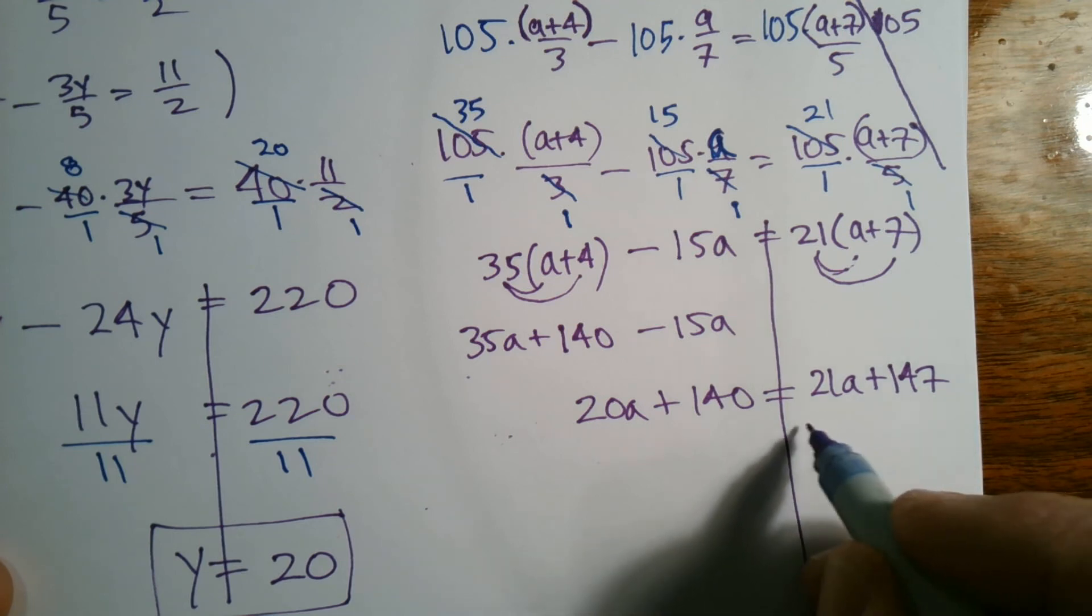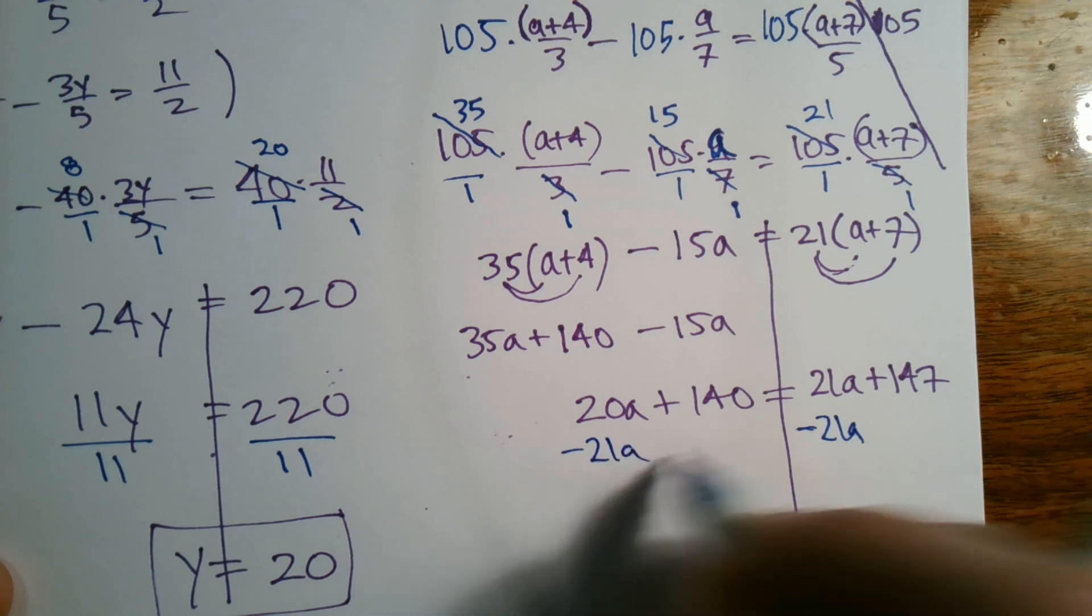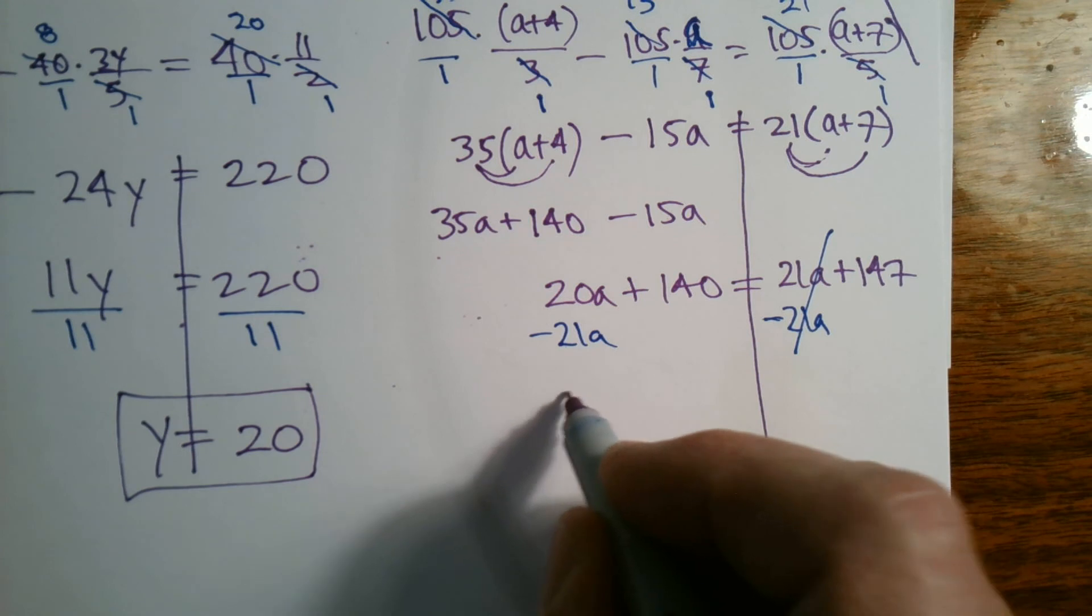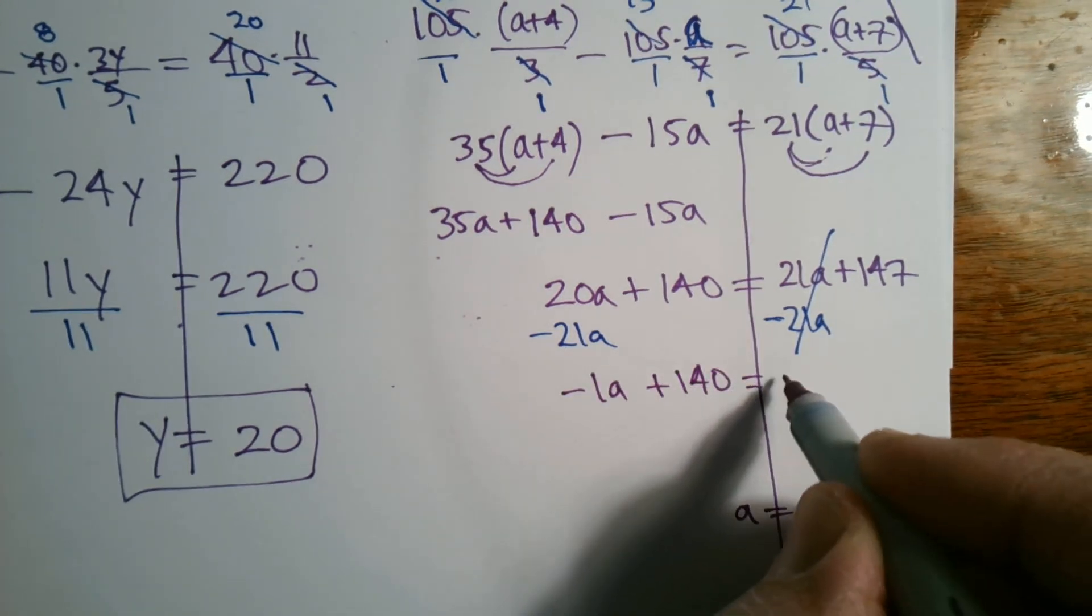And then at this point, get all my a's on one side. I'm going to subtract 21a from this side in order to eliminate the a's because my goal is to get my a alone over here. So I have negative 1a plus 140 equals 147.